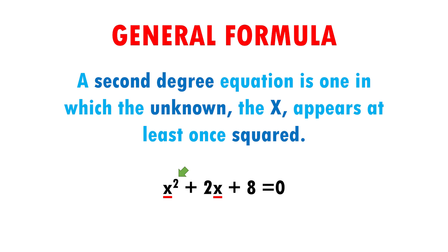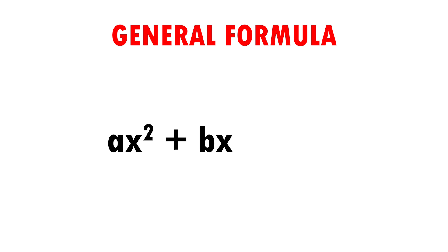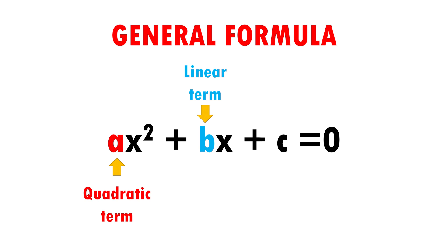The general formula that we will see later is used to solve second-degree equations, like ax squared plus bx plus c equals 0. We will call the letter a the quadratic term, the letter b the linear term, and the letter c the independent term. That means a is by the x squared, b is by the x not raised to any power, and c is the term that stands alone, not by any letter.